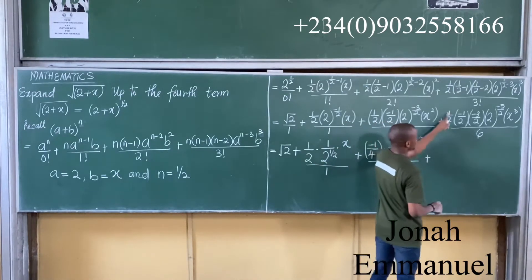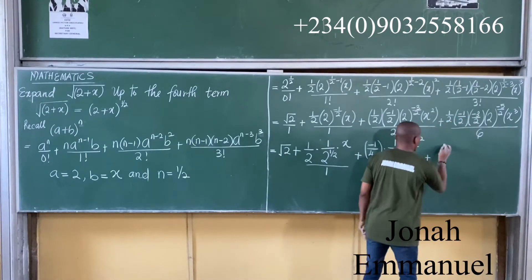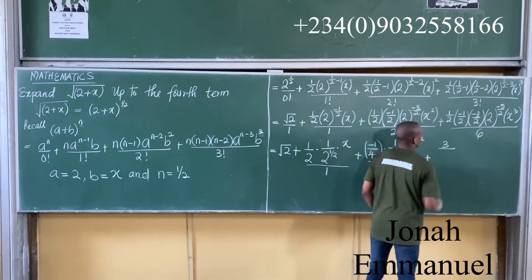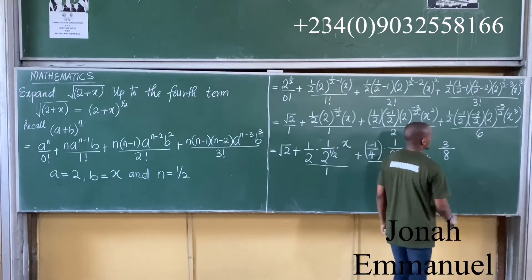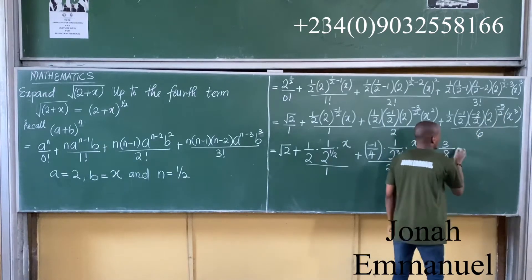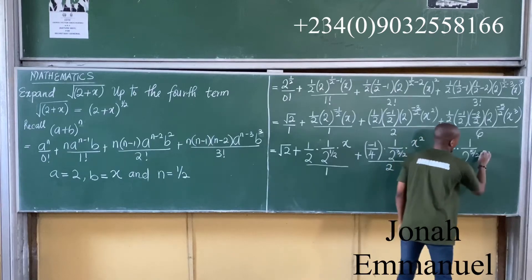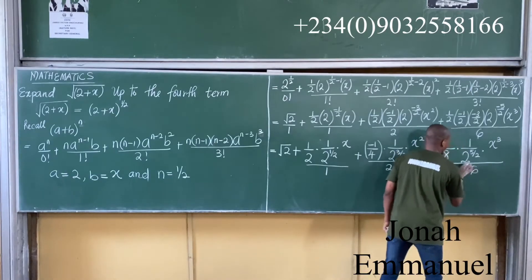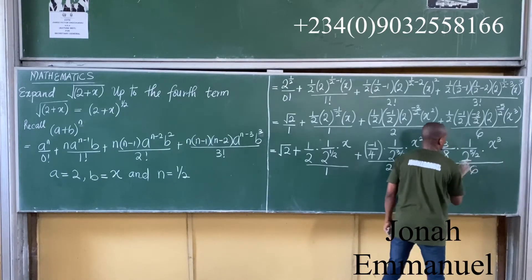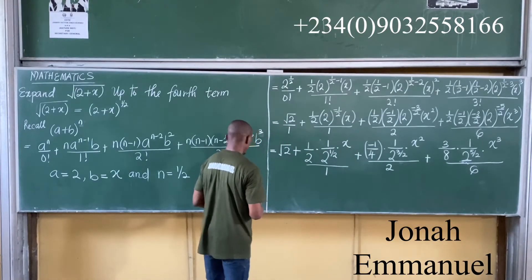Plus I am having 1 times minus 1, that's minus 1, times minus 3, that's minus 3. So it becomes 3 all over 2 times 2 is 4 times 2 is 8. To eliminate the negative, I will take the inverse. So it becomes 1 all over 2 to power 5 over 2. So I am having x cubed, it becomes x cubed all over 6. So I have this value here.